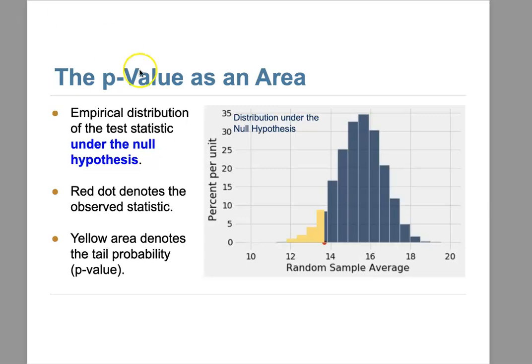In the last lecture we talked about the convention: we will accept the null hypothesis if the tail area is five percent. Afterward, that's our acceptance threshold for the null hypothesis. You can also use one percent — it all depends on the hypothesis testing topic you are dealing with. In our example we decided to check the five percent area for the tail.